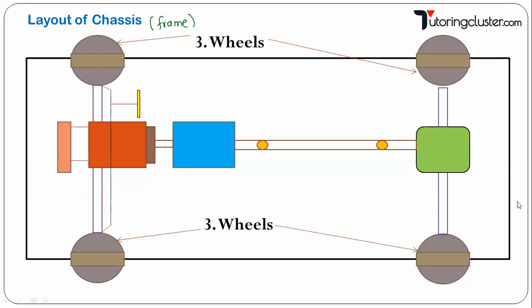Now what are wheels? Basically, wheels support the axle. The load of the vehicle and passengers is supported by the wheels through the axle. Of course there will be front wheels and rear wheels.